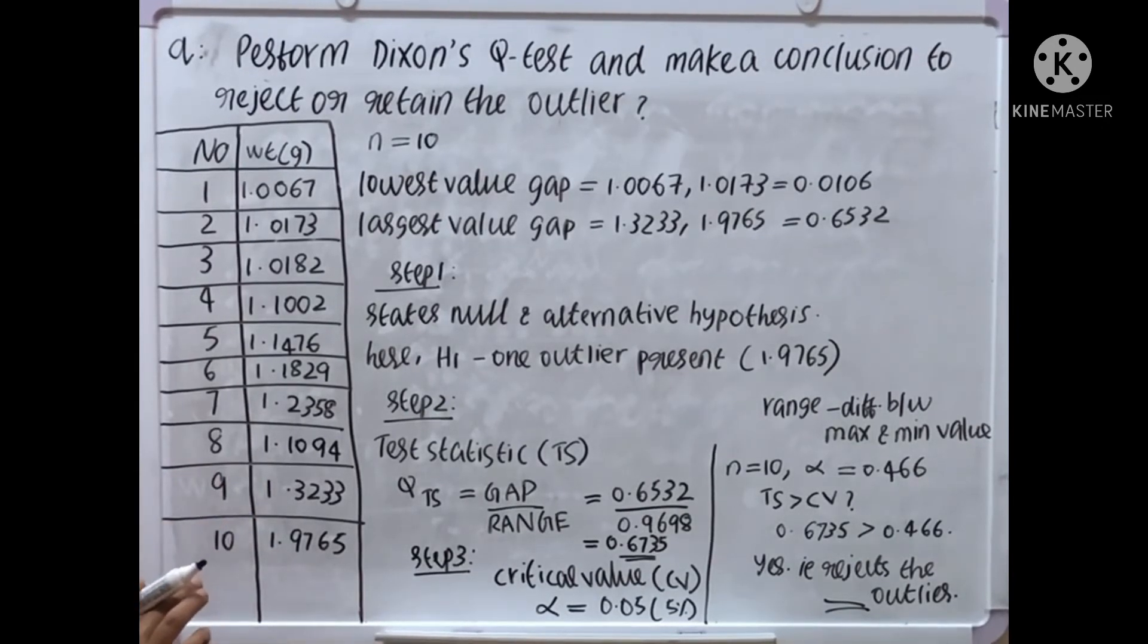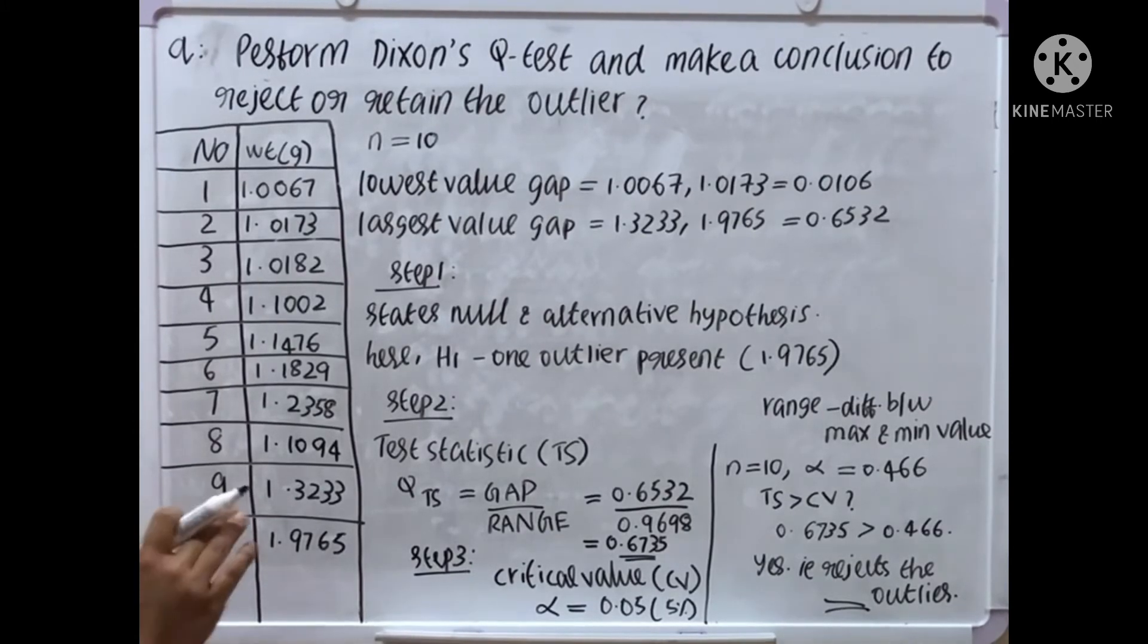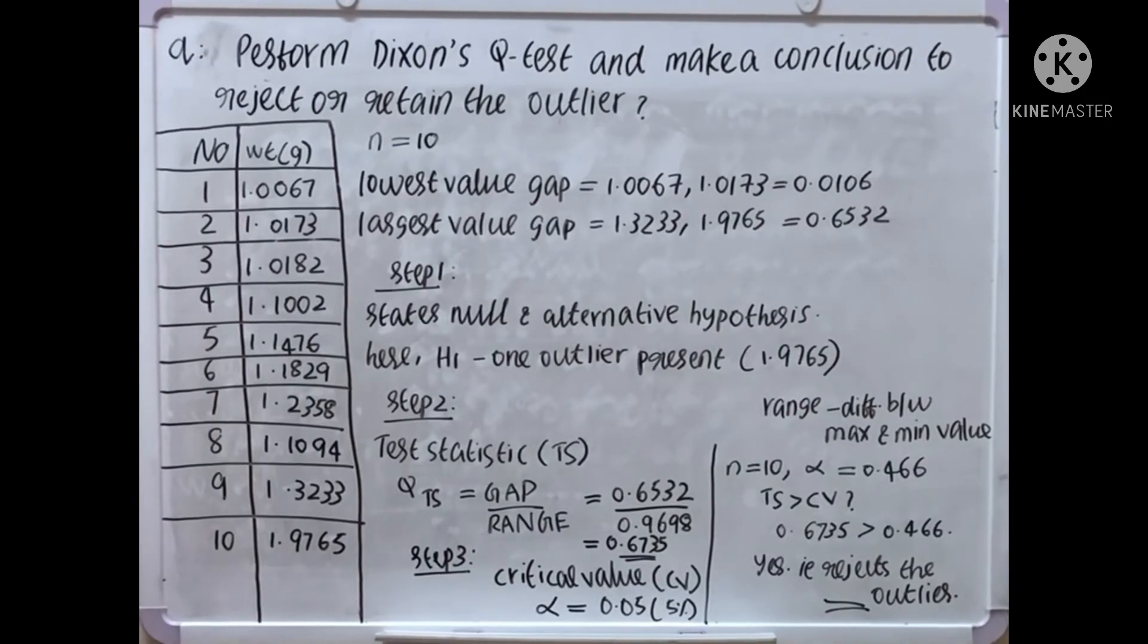Step 3: Critical value, CV. Critical value we have to find out. Alpha equal to significance, alpha means significance equal to 0.05, that is 5 percentage, already defined. Next, here N equal to 10, number of samples equal to 10.